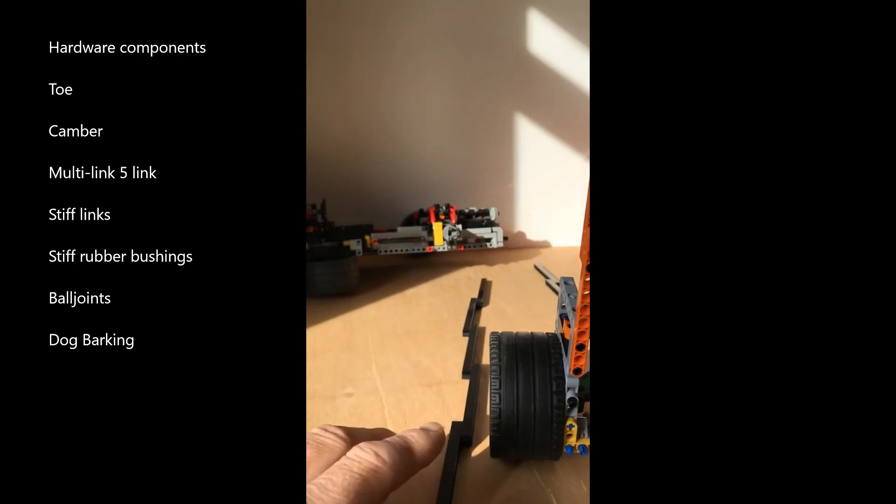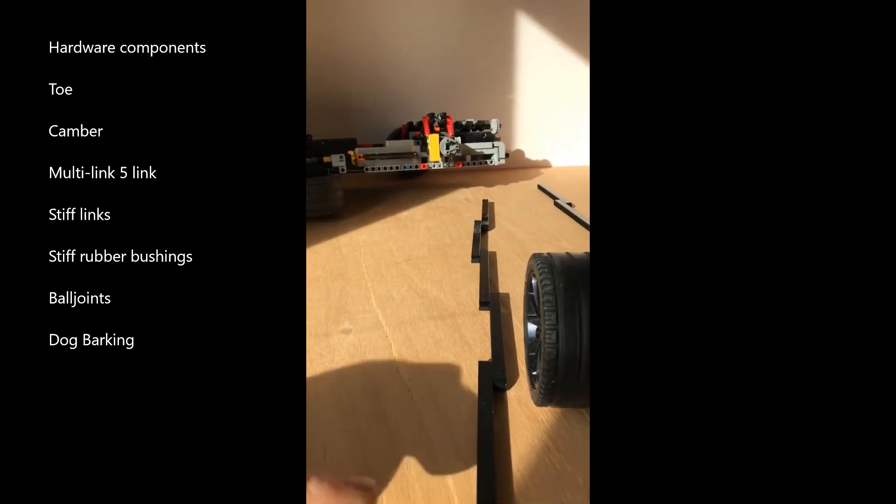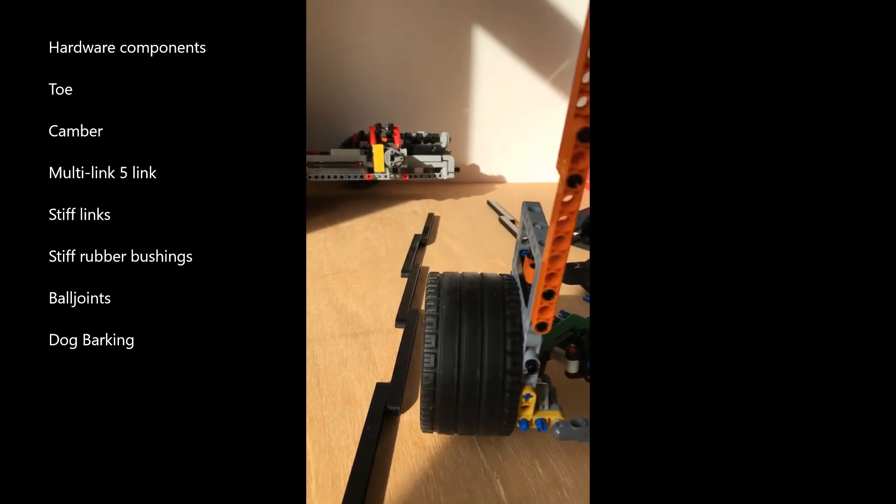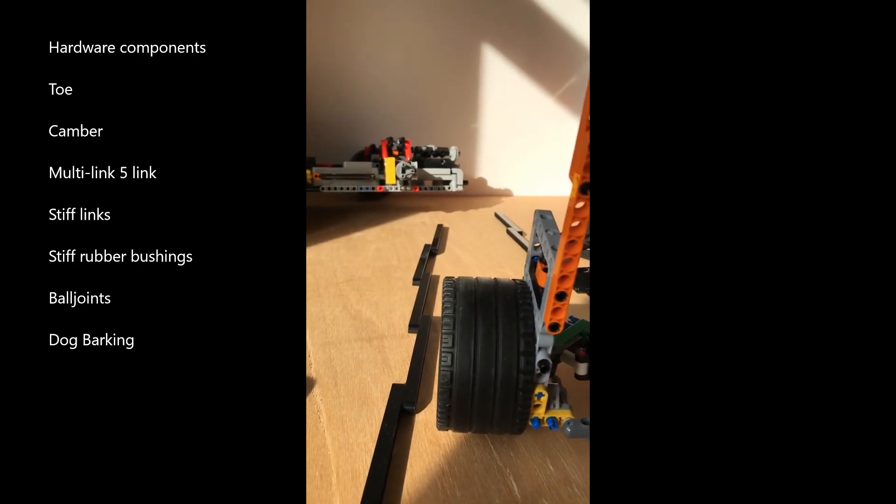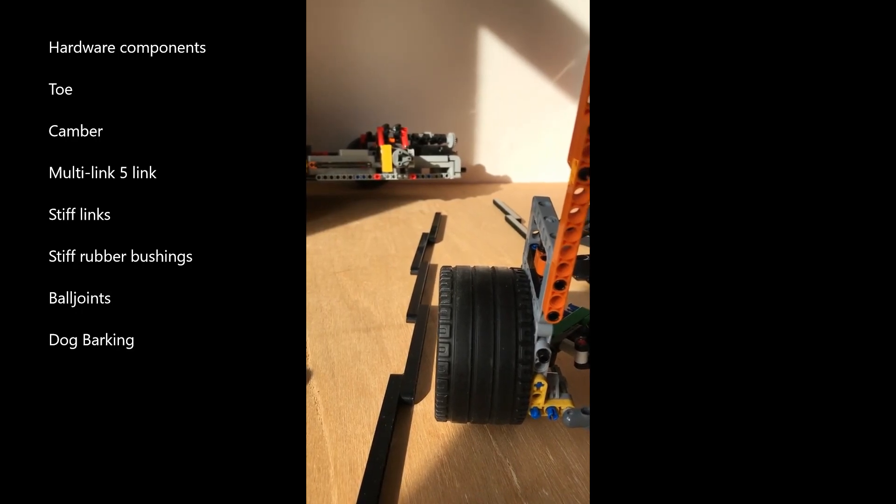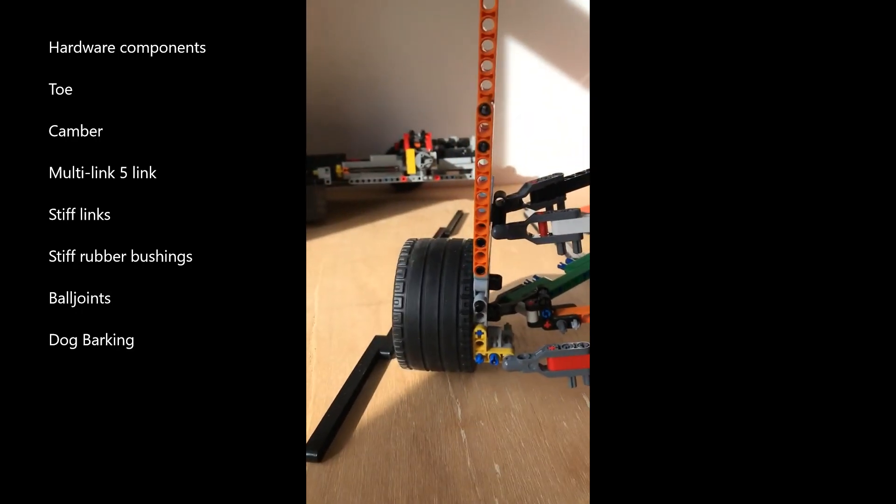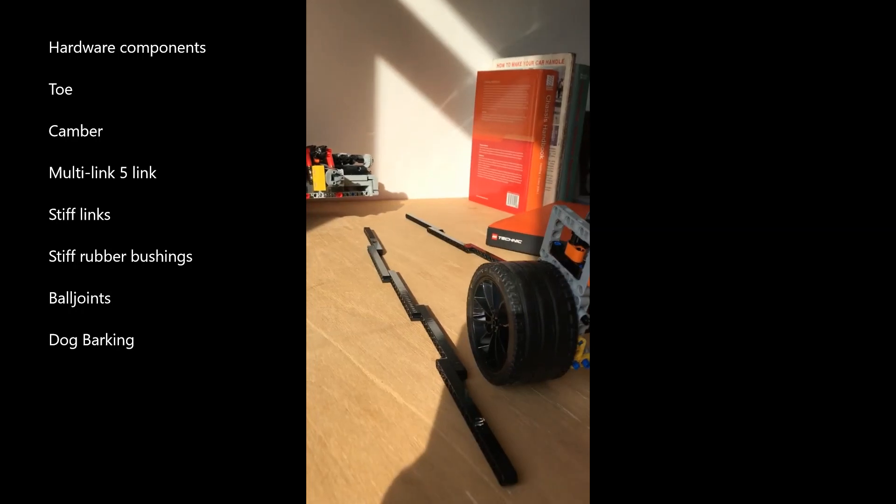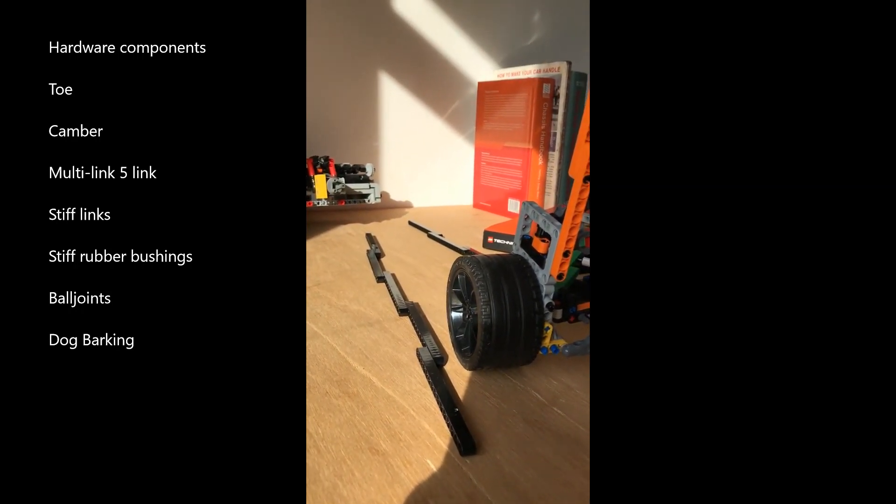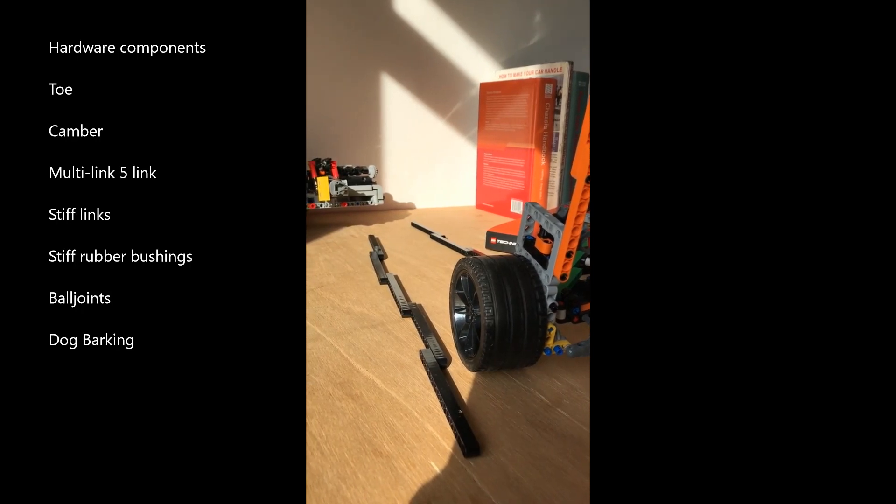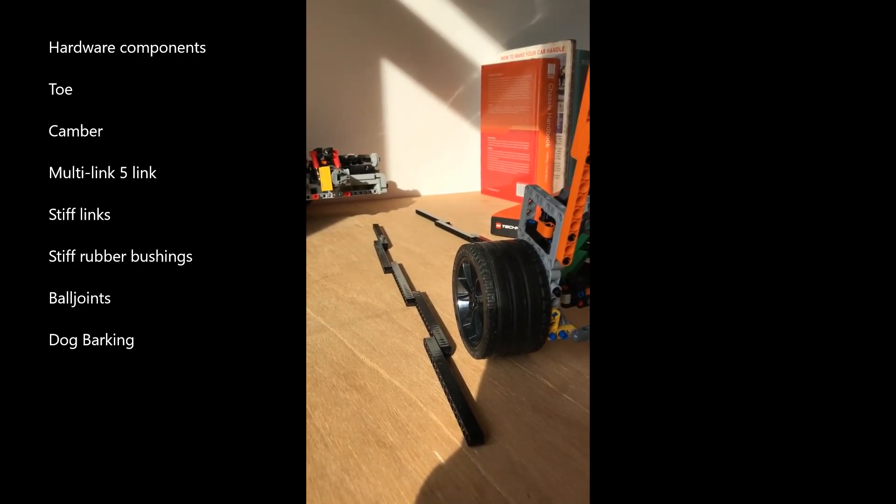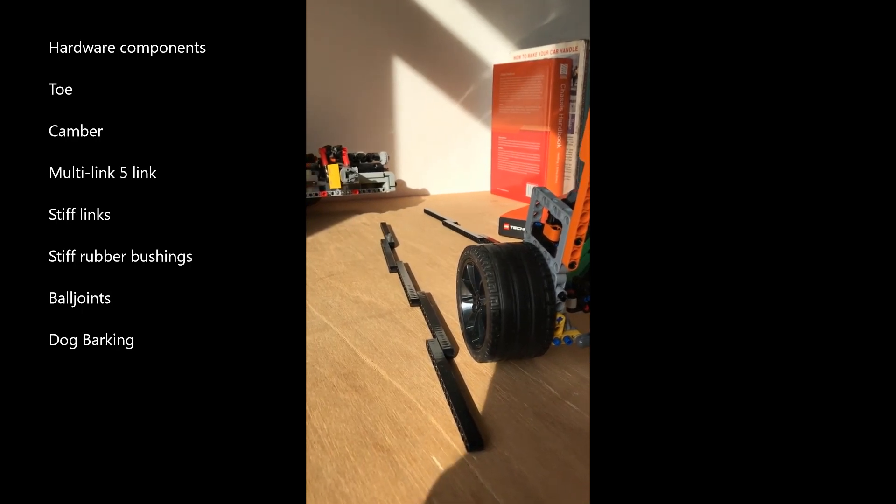For example, the toe on a typical car is defined by this line here. If this is the centerline of the car, these two lines would meet about 10 meters in front of the car and we call this toe-in. It's toe-in that is responsible for the stability of the rear axle. Toe-out would give an unstable axle which would then swap ends on us in a turn.